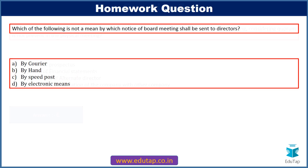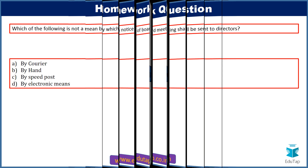The homework question for you: Which of the following is not a means by which notice of a board meeting shall be sent to directors? Options are by courier, by hand delivery, by speed post, or by electronic means. Please give your answer in the comment section. I shall be discussing the answer tomorrow and checking who has given the correct answer. See you guys tomorrow. Thank you very much. All the best.